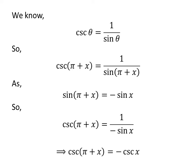We know, 1 upon sin of x is equal to cosecant of x. So cosecant of pi plus x is equal to minus cosecant of x.